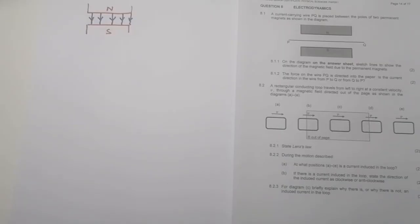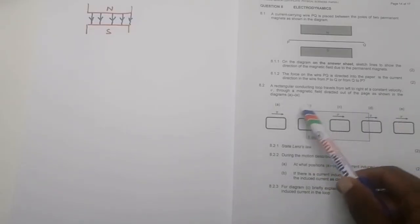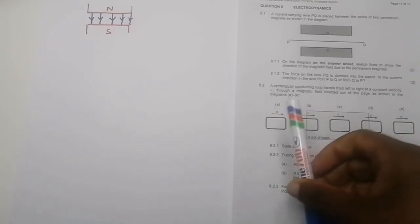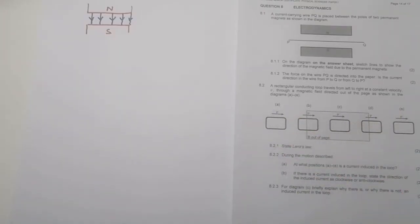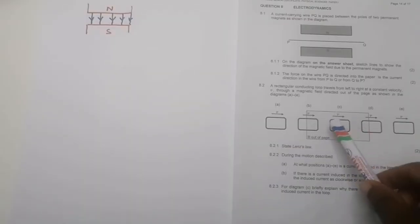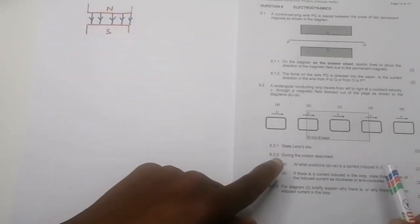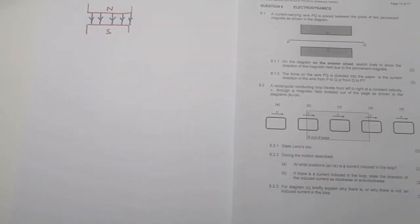Now they are telling us we've got a rectangular conducting loop that travels from left to right at a constant velocity through a magnetic field directed out of the page, as shown in diagrams A to E. At position A, the loop is still outside of the magnetic field, so there would be no change in magnetic flux and therefore no induced current. At position C, there is no change again — you are still within the field, so there will be no change in magnetic flux.